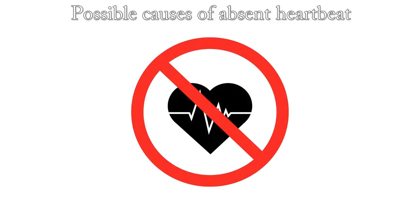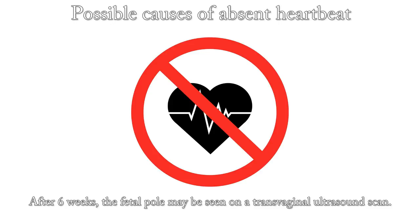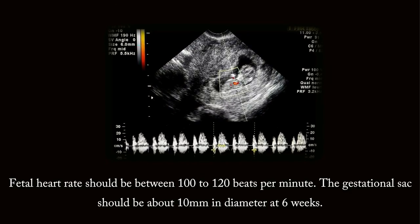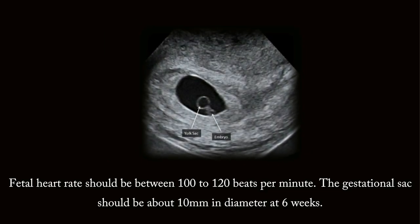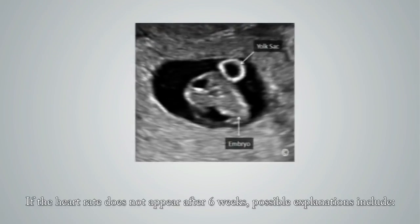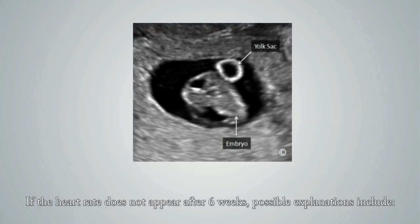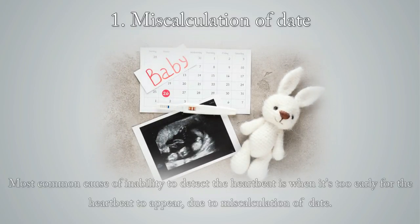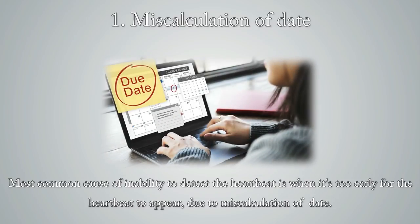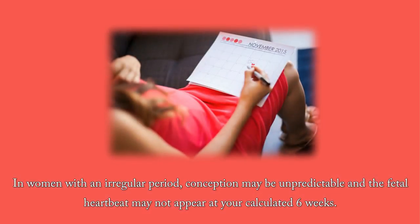What are the possibilities when the heartbeat is absent? After 6 weeks, the fetal pole may be seen on a transvaginal ultrasound scan, and fetal heart rate should be between 100 to 120 beats per minute. The gestational sac should be about 10 millimeters in diameter at 6 weeks. If the heart rate does not appear after 6 weeks, the most common cause is miscalculation of date — it may simply be too early for the heartbeat to appear, especially in women with irregular periods where conception timing is unpredictable.